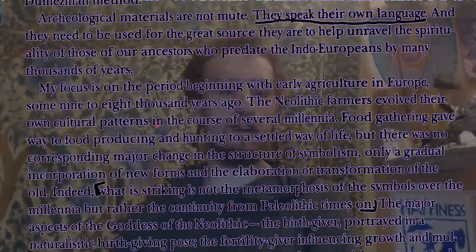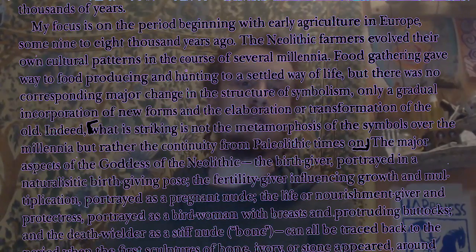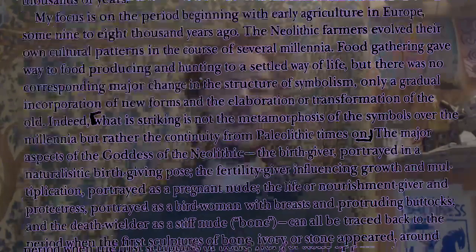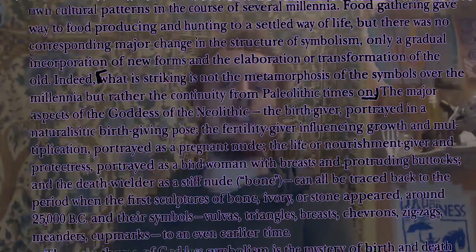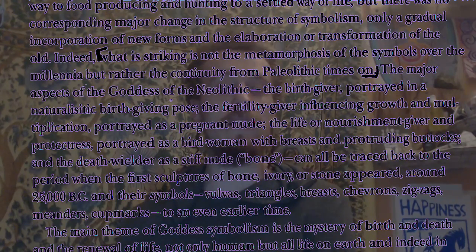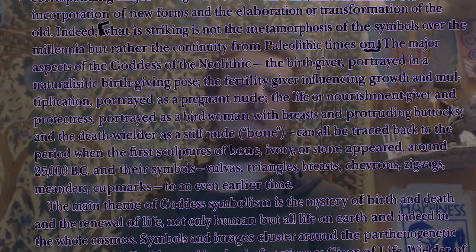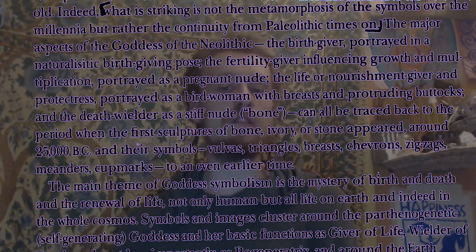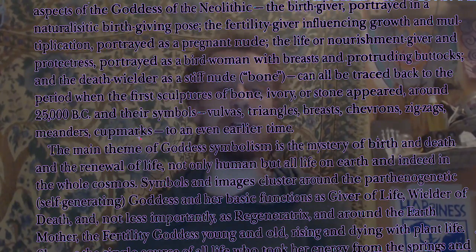My focus is on the period beginning with early agriculture in Europe, some 9,000 to 8,000 years ago — now probably pushed back to maybe 10,000 or 11,000 years ago. The Neolithic farmers evolved their own cultural patterns over the course of several millennia. Food gathering gave way to food producing and hunting to a settled way of life, but there was no corresponding major change in the structure of symbolism, only gradual incorporations of new forms and elaboration and transformation of the old. What is striking is not the metamorphosis of the symbols over the millennia, but rather the continuity from Paleolithic times on. The major aspects of the Neolithic goddess — the birth-giver portrayed in a naturalistic birth-giving pose, the fertility-giver portrayed as a pregnant nude, the life or nourishment giver portrayed as a bird-woman, and the death-wielder as a stiff nude bone — can all be traced back to around 25,000 BC, and their symbols — vulvas, triangles, breasts, chevrons, zigzags, meanders, cut marks — to an even earlier time.